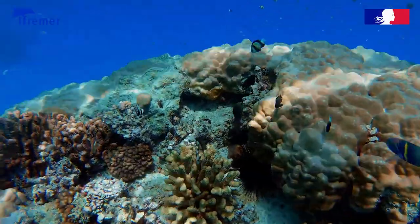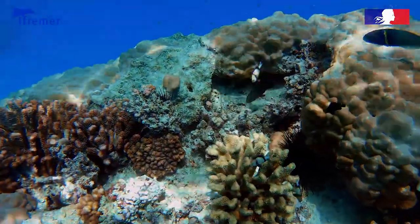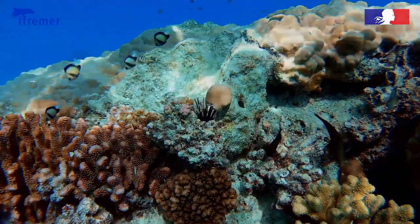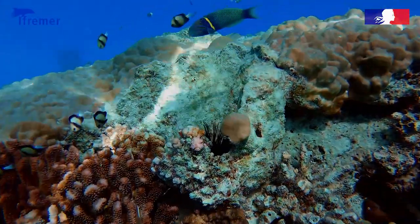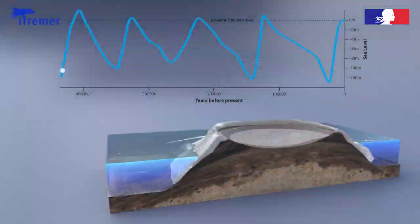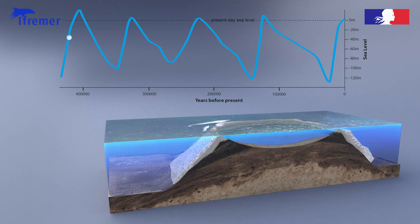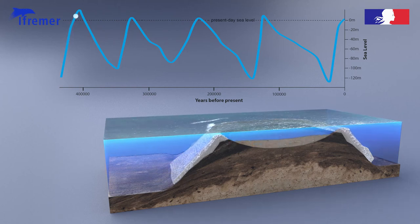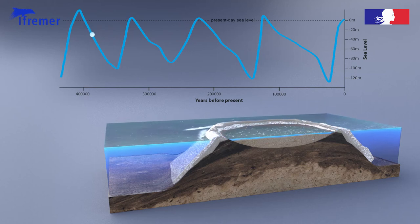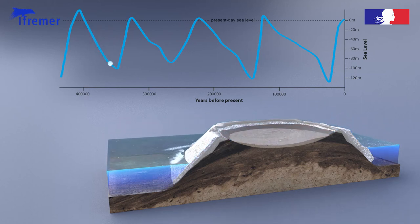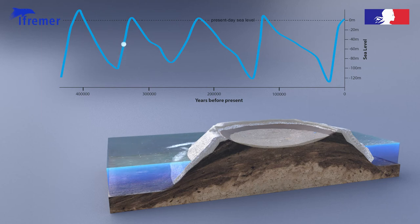Modern atolls have developed over the last 450,000 years, a period uniquely characterised by five sea level cycles of high amplitude of around 130 metres. The atolls formed periodically during the short, warm interglacial intervals when the karstified exposed flat-top banks were re-flooded.